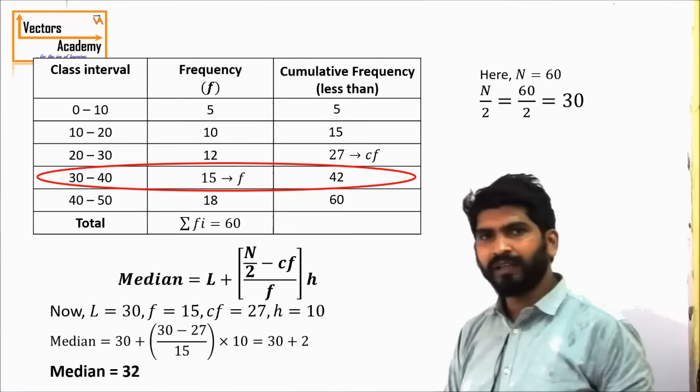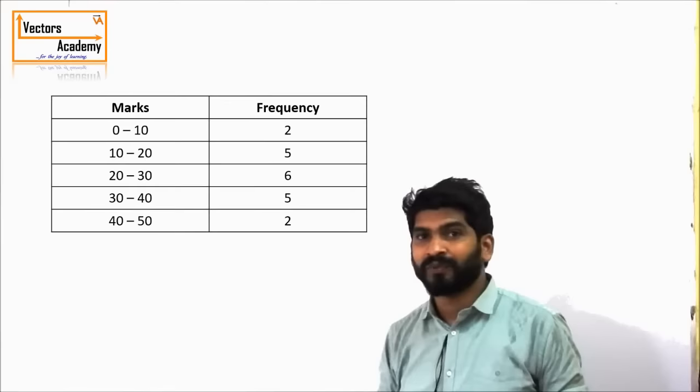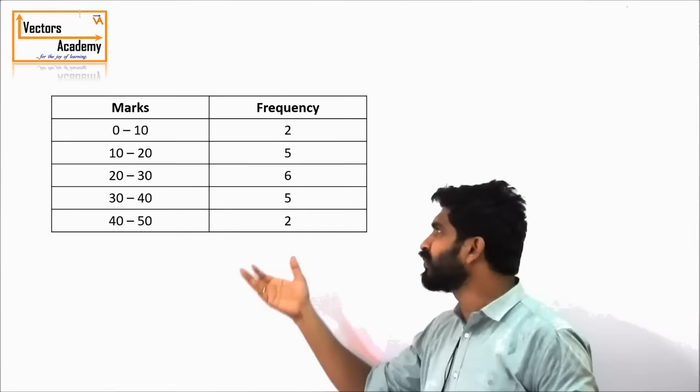This is how we calculate the median. Now let us look at how we calculate the mode. Finding mode is even easier — we just have to remember one formula with no other modification to the table. Consider this data: suppose it represents the number of students who scored marks between 0 and 10. There are 2 students who scored marks between 0 and 10, and so on.